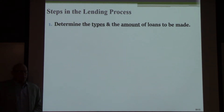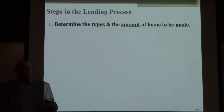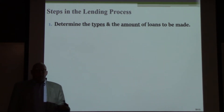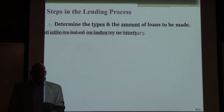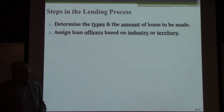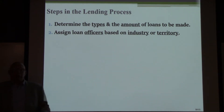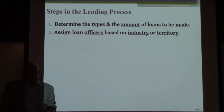Steps in the lending process. First, determine the types of loans that you want to make as a bank and the amount of the loans. What size loans do you want to make? Then assign loan officers based on industry or territory, geography, or maybe they're industry specialists.